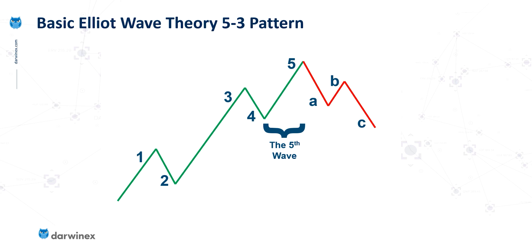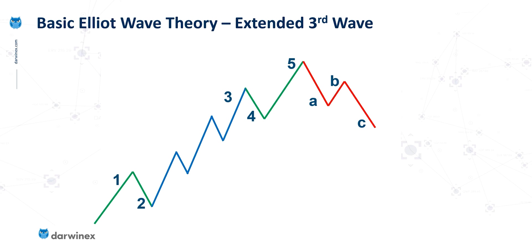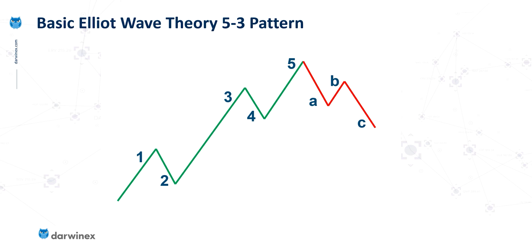Because when you do have wave extensions, which do occur — for example, this is an illustration of a third wave extension — it becomes increasingly difficult to work out with any certainty when that fifth wave is actually taking place. So in effect, the fifth wave exhaustion is looking at volume data during this period of time. And when you see higher levels of volume compared to the norm during the latter stages of a multi-wave impulse like this, that's often a good indication that the impulse is nearly over and we're about to enter this ABC phase.